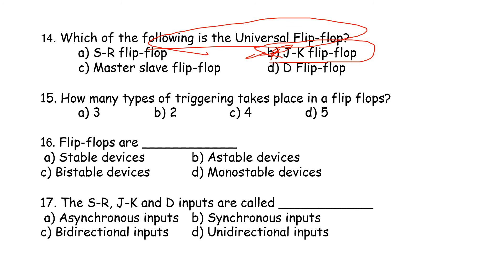The JK flip-flop also resolves the forbidden state. Fifteenth question: How many types of triggering take place in flip-flops? There are 3 types of triggering in flip-flops: level triggering, edge triggering, and pulse triggering.